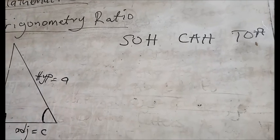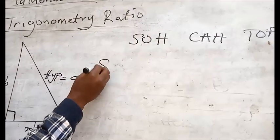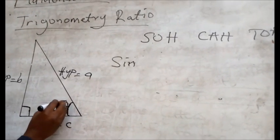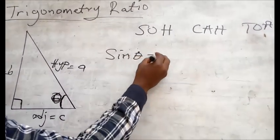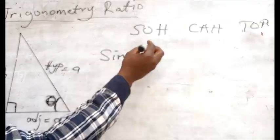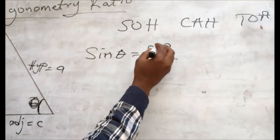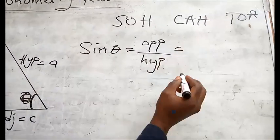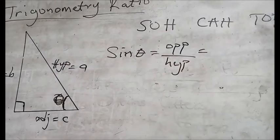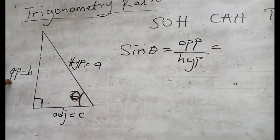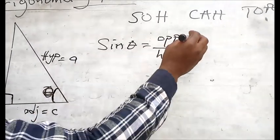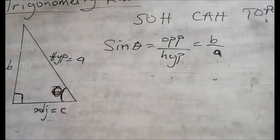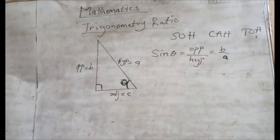Now if you are looking at this, we will look at the SOH. The SOH is talking about sine. So let's assume that the angle is theta. It's going to be: sine theta equals to O over H — the O is our opposite and the H is our hypotenuse. So using the alphabetical labels we gave, the opposite will be B and the hypotenuse will be A.